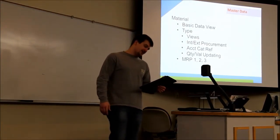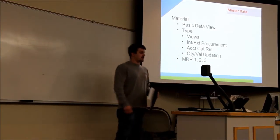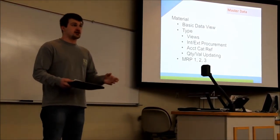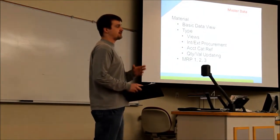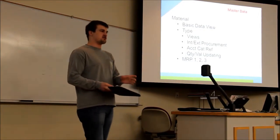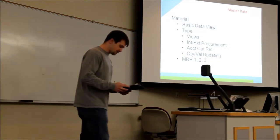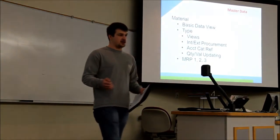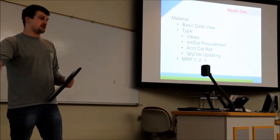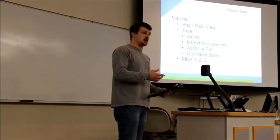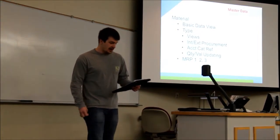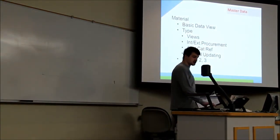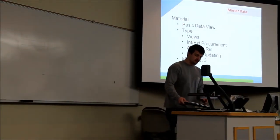General data such as... And then material type is also a segment of the data associated with the material. Material type determines the views that are available to you as a user. Different types of materials contain different types of information related to it. Material type also determines if it's internally or externally procured. That means whether or not we buy it from outside company or produce it ourselves. It also determines the account category reference and quantity and value updating. And it does include in the material master all the information needed for MRP.